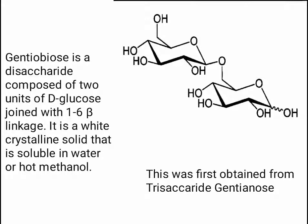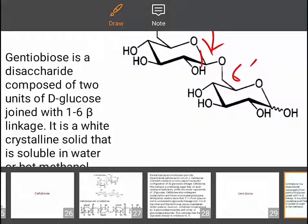Gentiobiose is a disaccharide composed of two units of D-glucose joined with a 1,6-beta linkage. It is a white crystalline solid that is insoluble in water or hot methanol. It was first obtained from the trisaccharide gentiianose. In the structure of gentiobiose, the beta linkage is at C1, connected to the hydroxyl group at C6' — the 1,6'-linkage.